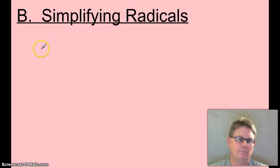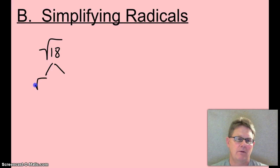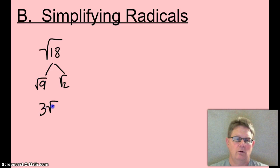Simplifying radicals. Square root of 18 — what you want to do is find the biggest factor of 18 that's a perfect square, meaning what number times itself. 9 is the biggest perfect square factor of 18. What's the square root of 9? 3. So radical 18 can be simplified to equal 3 root 2.